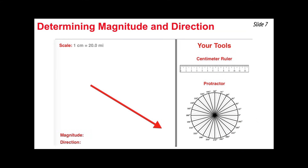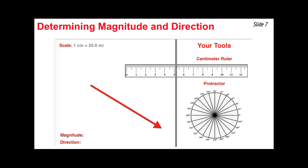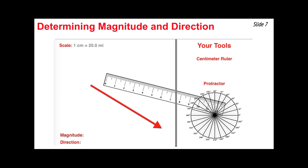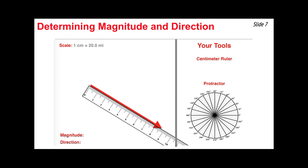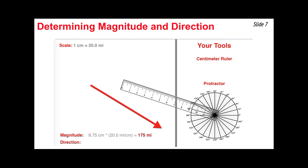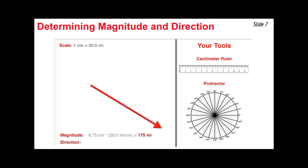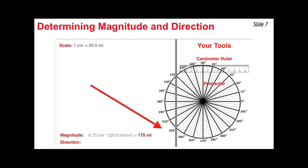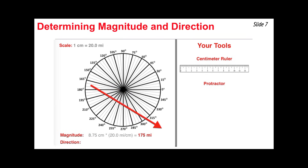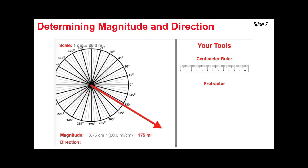To determine the magnitude and direction of a vector on a scaled vector diagram, you need a ruler and a protractor. Place the ruler's end at one end of the vector and measure its length — in this case, 8.75 centimeters. Use the scale to convert to 175 miles as real-world units. Then place the protractor's origin at the tail of the vector and read off the direction — in this case, 326 degrees.